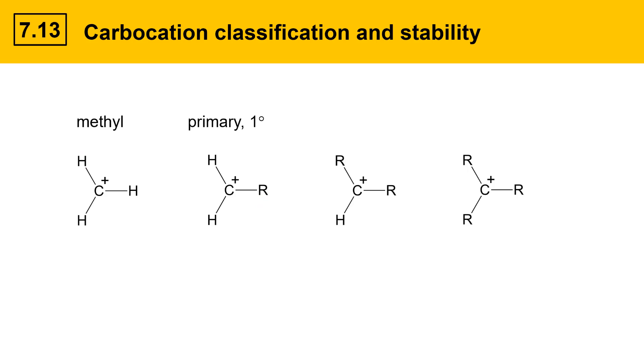Secondary carbocations have two r groups attached to the central carbocation carbon and tertiary carbocations have three carbon groups attached to the carbocation carbon.